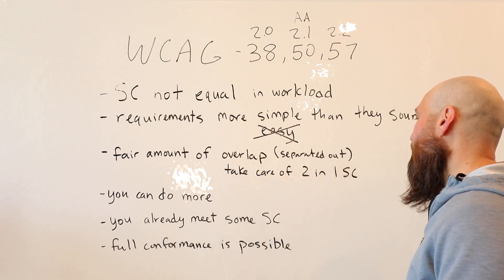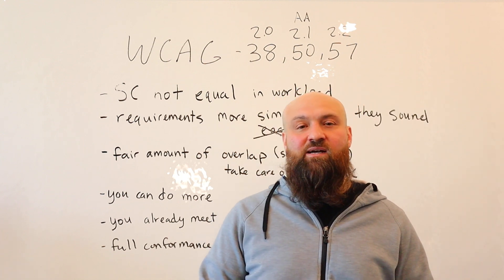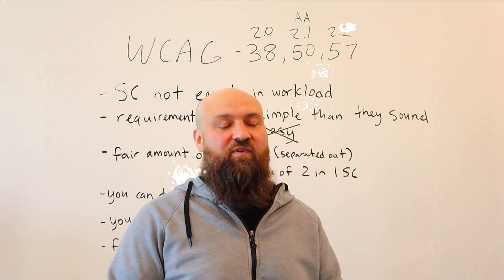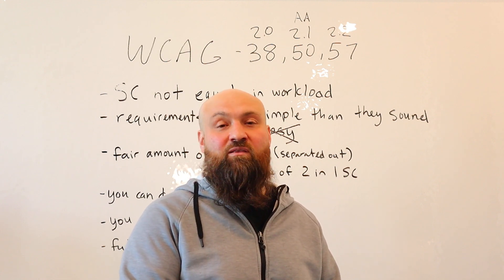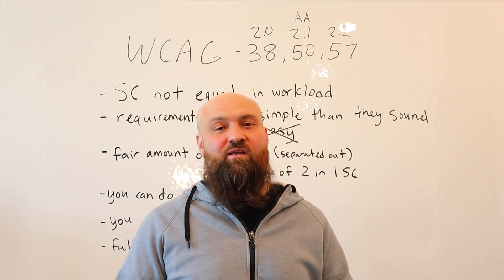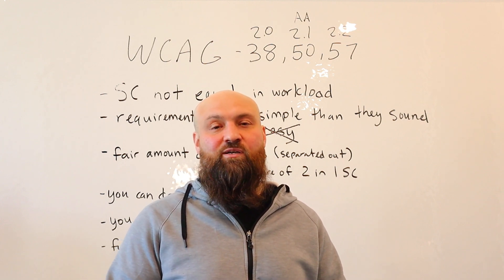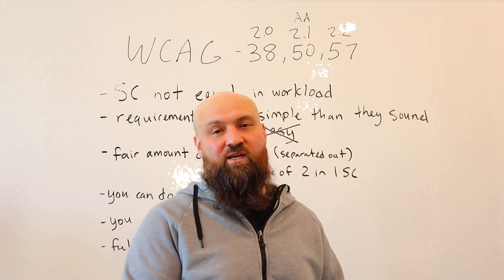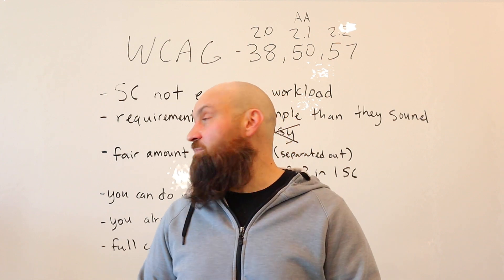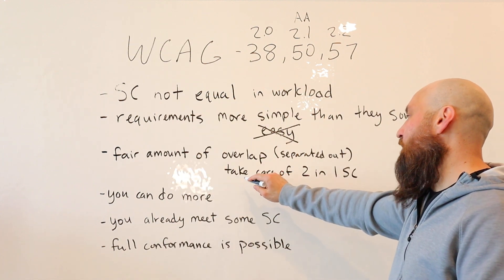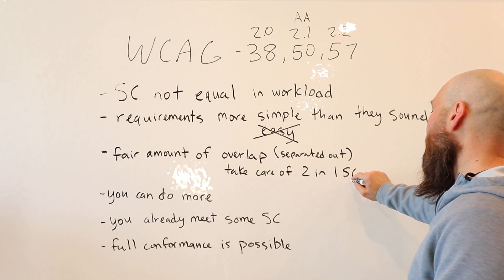There's also a fair amount of overlap between the different success criteria. The Web Content Accessibility Guidelines separates success criteria for specific things. For example, there's a success criterion for making sure there is no keyboard trap on your website, and there's also one for making sure your website is keyboard navigable. To me, those things are done all together — so while there may be two different success criteria for keyboard navigability, I'm going to take care of both in one action. You can take care of multiple success criteria while addressing one of them.